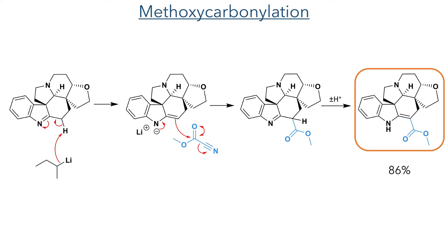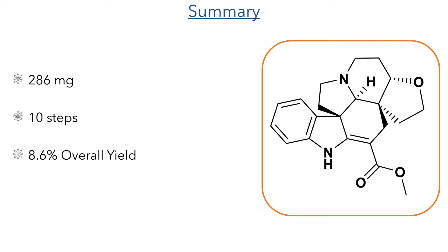With this key reaction complete, it was a trivial matter to install the methoxycarbonyl group using Mander's reagent. This reagent is very selective for C-alkylation, which is why it is often used in place of the more common methyl chloroformate. Deprotonation with sec-butyllithium produces an enamide which acts as a nucleophile towards the carbonyl group, forming the target methyl ester in 86% yield along with expulsion of lithium cyanide. This reaction completed the synthesis of deoxoapidine. Overall, the molecule was synthesized in a total yield of 286 mg in only 10 steps with an 8.6% overall yield.